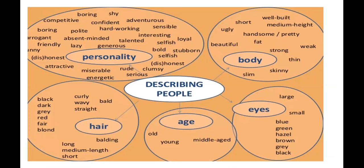We are not only physical persons — we also have personality. Here are some adjectives for describing personality: honest, dishonest, attractive, miserable, energetic, rude, serious, clumsy, selfish, bold, stubborn, loyal, generous, talented, interesting, sensible, hardworking, adventurous, confident, shy, polite, absent-minded, lazy, funny, friendly, arrogant, boring, competitive.